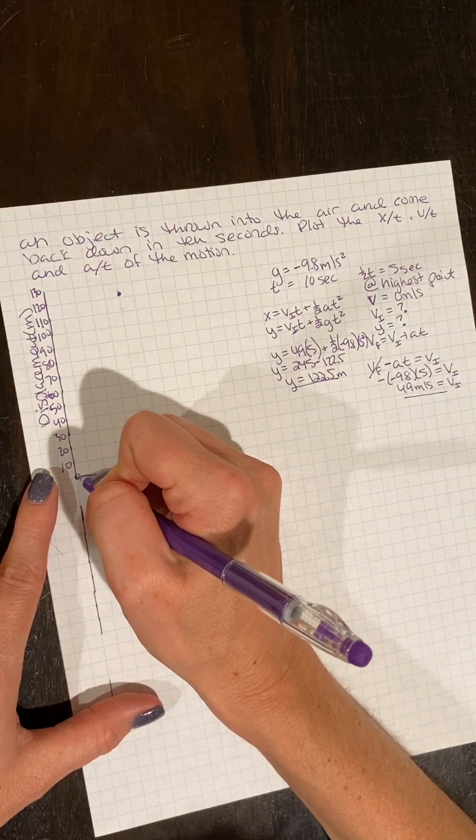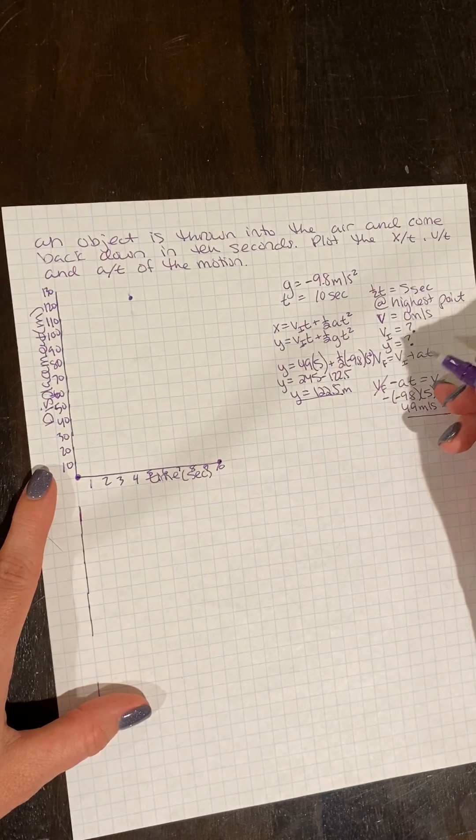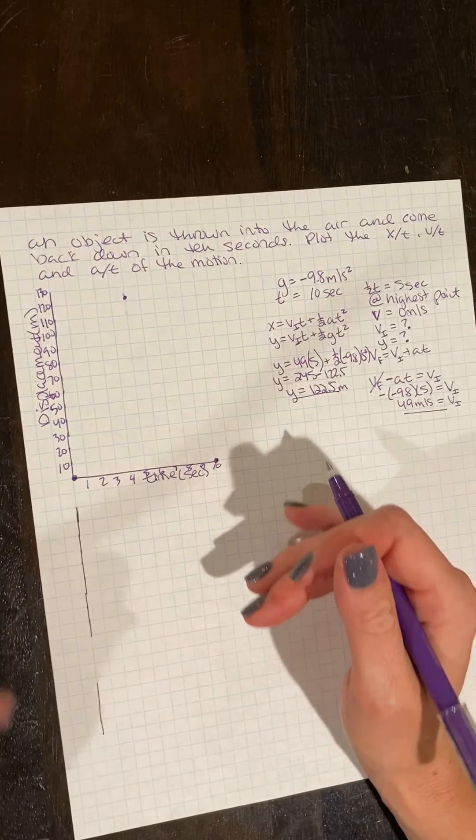All right. And I know at my beginning of my flight, I'm at 0. And I know at the end of my flight, I'm also at 0. So we've got this part of our graph so far.